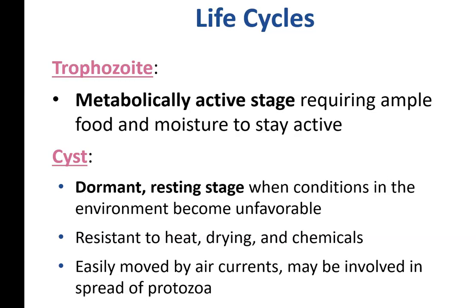Life cycles of protozoa: we typically worry about two stages. The trophozoite stage is the active feeding, reproducing stage — they need a lot of nutrients to be active. Then there is the cyst stage, which is the dormant resting stage. They enter the resting stage when the environment or nutrients aren't quite right and can survive through that period, then turn active again and become a trophozoite.